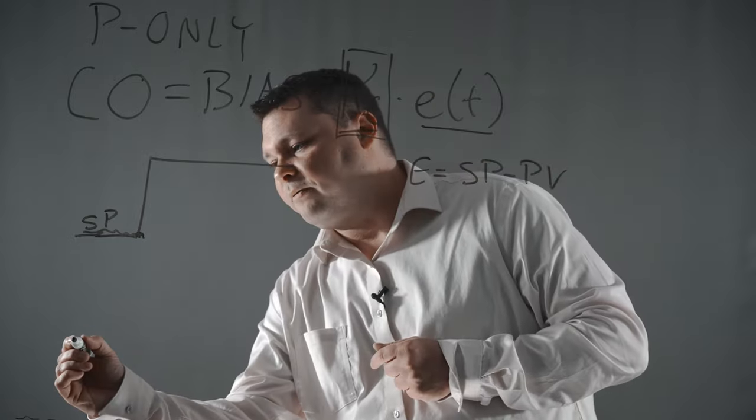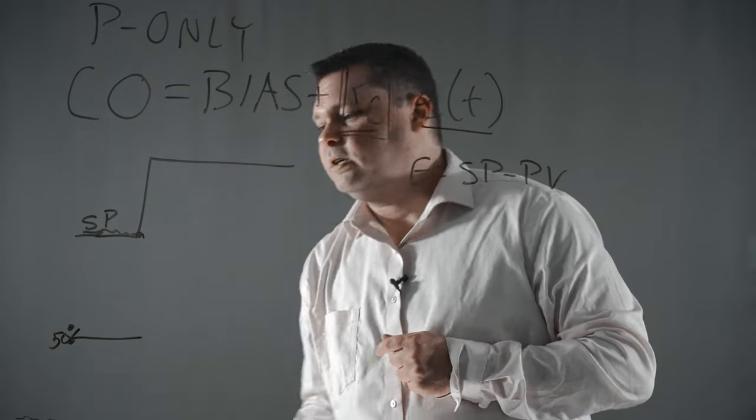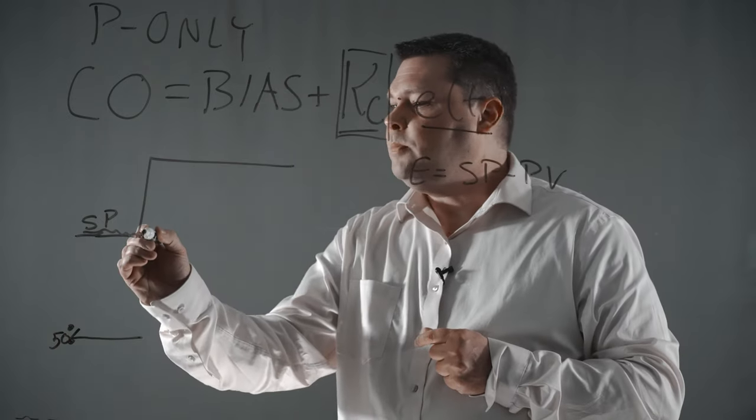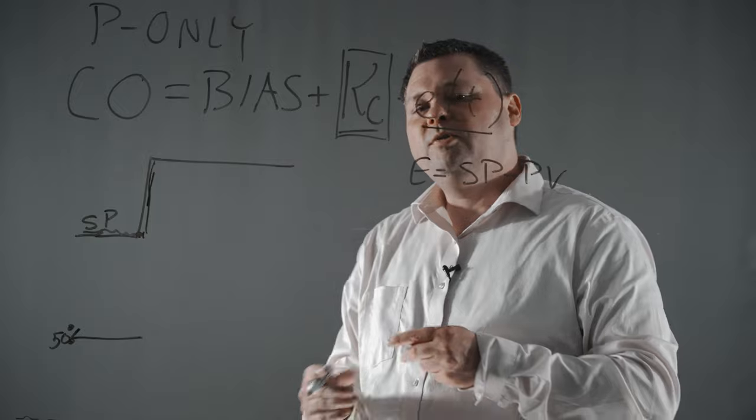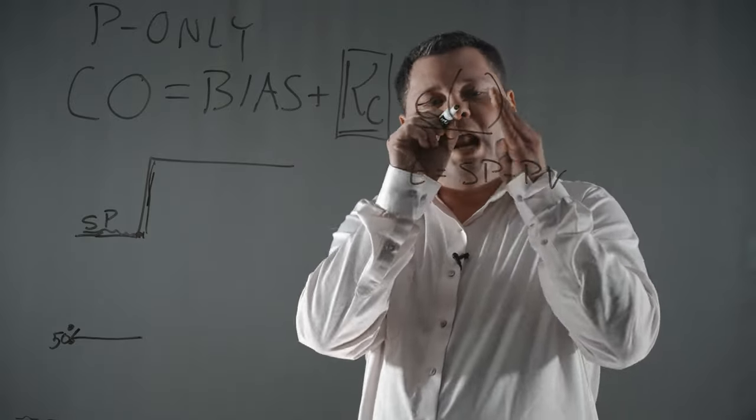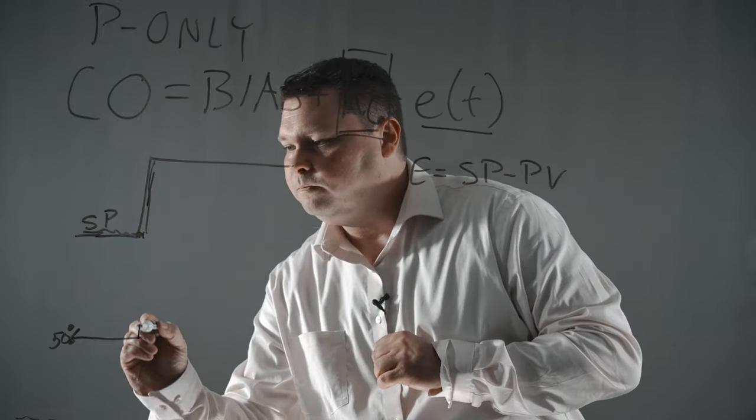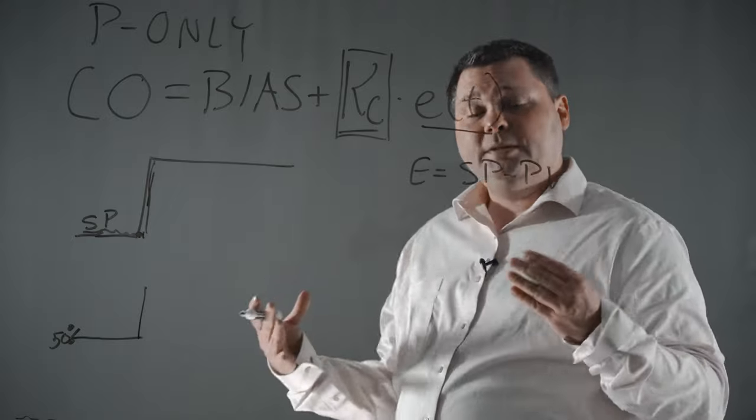So we essentially have a controller output that starts at, let's just say, 50%. All of a sudden, we make a setpoint change, and we've introduced error into the equation. So now that we have error, it's whatever that error is times your gain. So what you get is a step to the output.